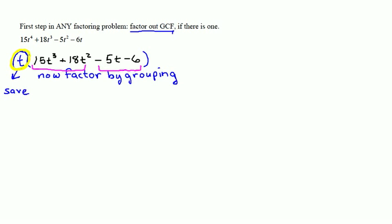Now looking at the polynomial inside the parentheses, I see that I can factor 3T squared out of the first group, and taking out 3T squared leaves me 5T plus 6.